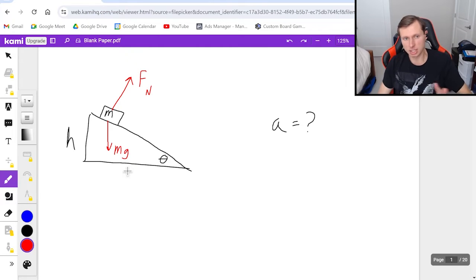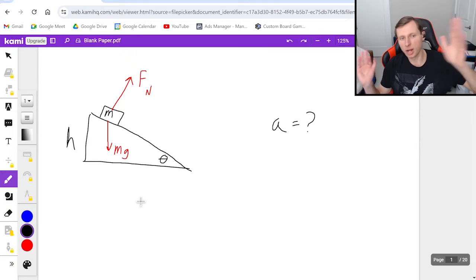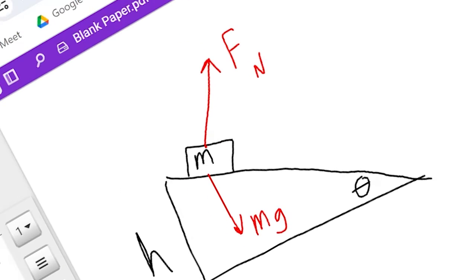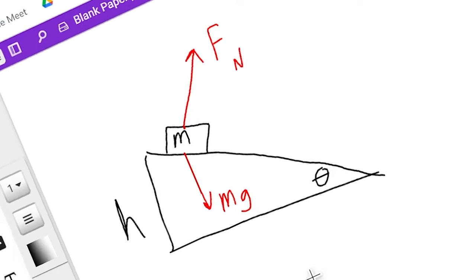Now the next step is the secret to any ramp problem. The secret is rotate the diagram so that you're now on flat ground. So what I'm going to say is imagine as if this ramp were on flat ground and normally I tell my students tilt your head so it looks like the ramp is flat, but the beauty is because of movie magic I can actually take this ramp and I can rotate it on screen right now so it looks like it's flat and now you can actually see what I'm talking about.